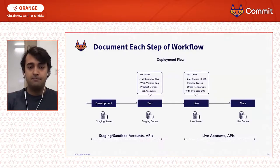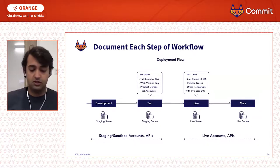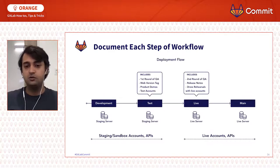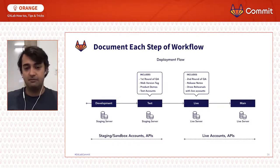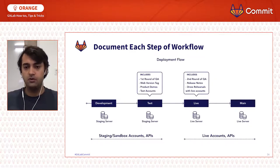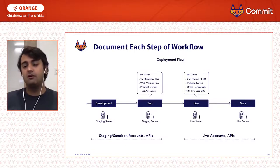We also need to document each step of the workflow. Based on experience working with remote freelancers and my own team, each person responsible for an environment needs to perform a first round of QA and apply proper version tags. Our development and test environments were on a staging server, while our live and main environments were on a live server connected to live APIs. This allowed us to run dress rehearsals with new customers or vendors on the live environment — so if they uploaded wrong data or made a mistake, end users wouldn't see it.